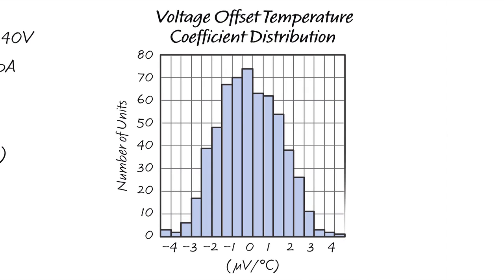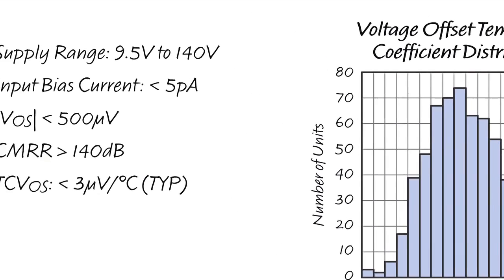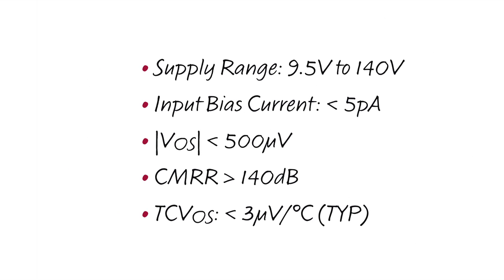It has voltage offsets under 500 microvolts with a temperature coefficient under 3 microvolts per degree C. One of the extraordinary features of this amplifier is its input common mode rejection ratio, which exceeds 140 dB.